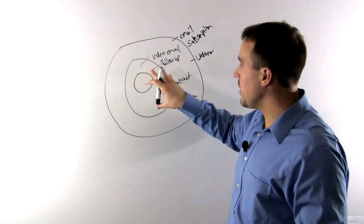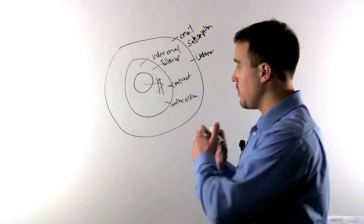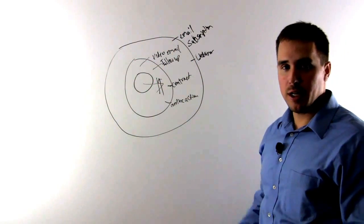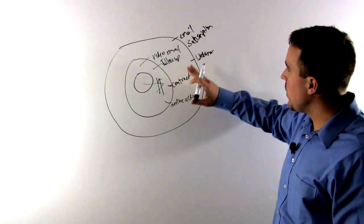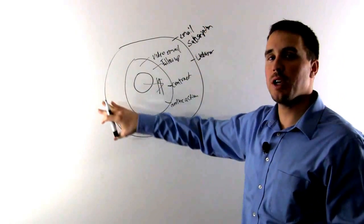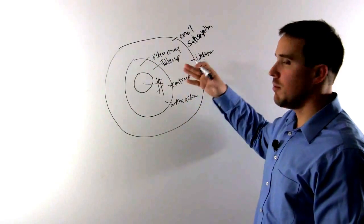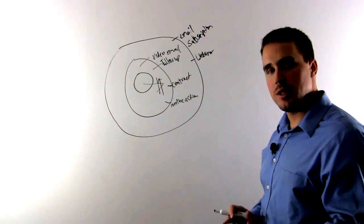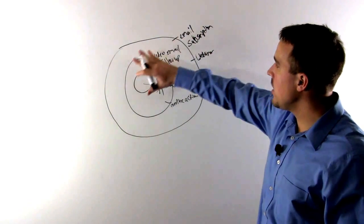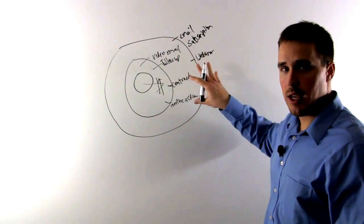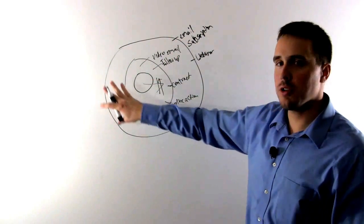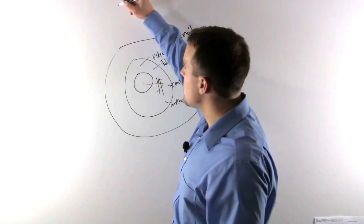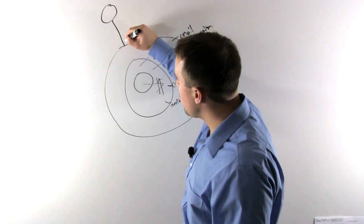If you don't have a complicated sales process, you might not have many layers in your inner circle. The key point is that once we have control of the information — the person's phone number, email, and permission to send them an email — all of those steps take place in the inner circle. In this hub-and-spoke strategy, everything out in the spokes is designed to drive people directly into this process.